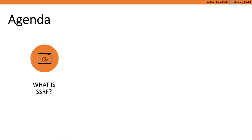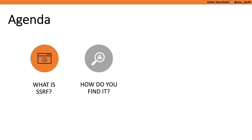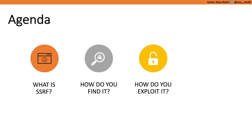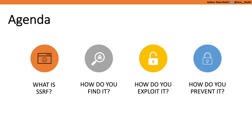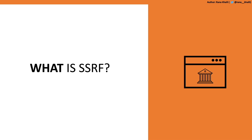The agenda for today is to first cover the technical details behind SSRF attacks: what is an SSRF vulnerability, what are the different types, what conditions must be satisfied for a page to be vulnerable, how common are they, and so on. Next we'll cover how to find SSRF vulnerabilities from both a white box and black box perspective. Then we'll discuss how to exploit them, and we'll end by covering techniques to prevent or mitigate SSRF attacks.